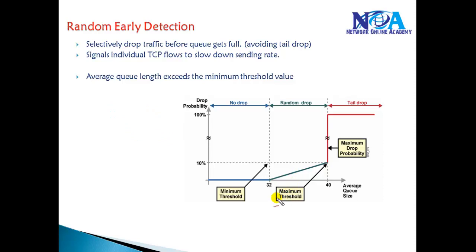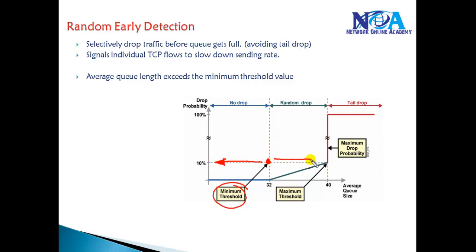The minimum threshold value is the level of packets at which we begin the random drop process. Anything below this minimum threshold value will not be dropped. Once the packet count reaches that limit, it will start randomly dropping traffic.